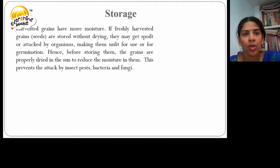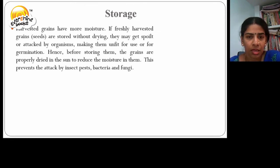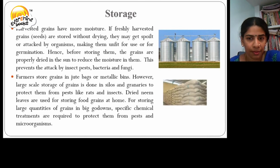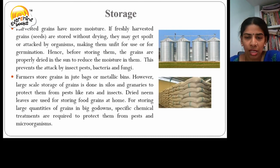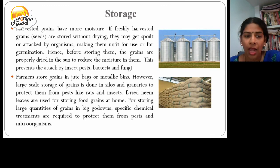Storage. Harvested grains have more moisture. If freshly harvested grains are stored without drying, they may get spoiled or attacked by organisms, making them unfit for use or for germination. Therefore, before storing, the grains are properly dried in the sun to reduce moisture. This prevents the attack by insects, pests, bacteria and fungus. Farmers store grains in jute bags or metallic bins. Large-scale storage of grains is done in silos and granaries to protect them from pests like rats and insects. Dried neem leaves are also used for storing food grains at home. For storing large quantities of grain in big godowns, specific chemical treatments are required to protect them from pests and microorganisms.